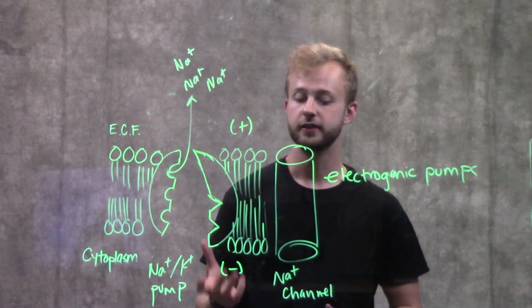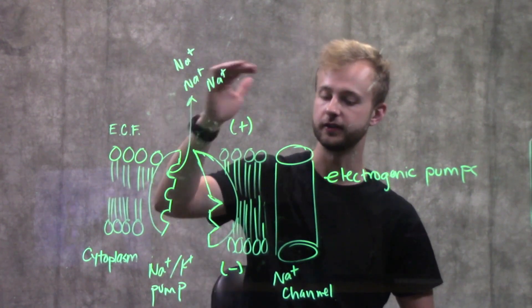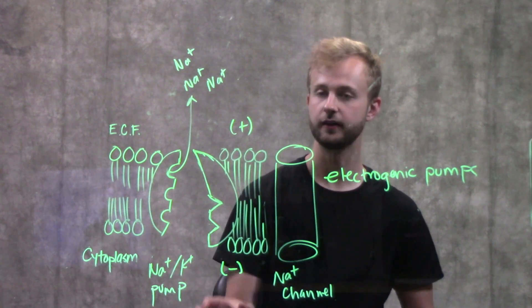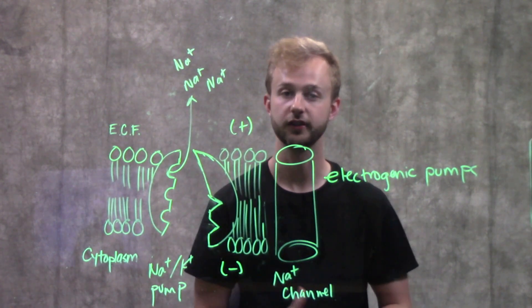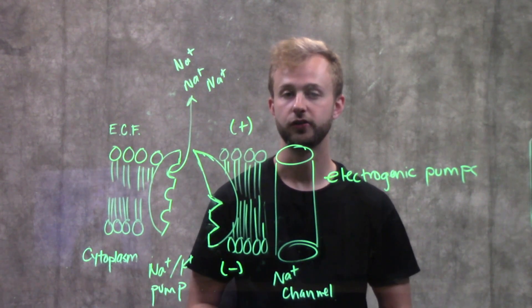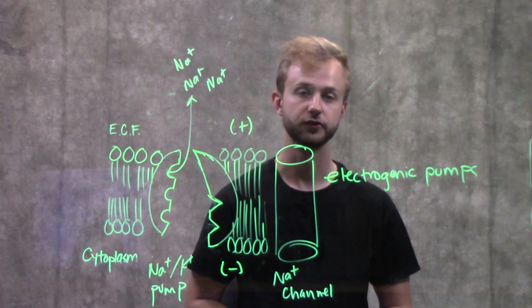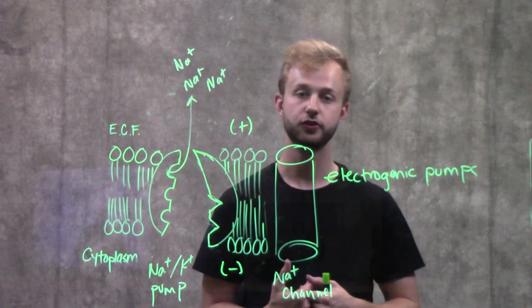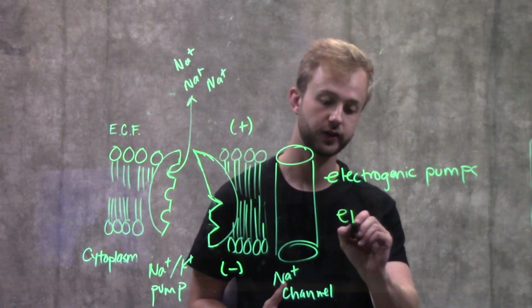But in addition, now sodium is going to be attracted to this negatively charged environment on the inside of our cells. So not only is it moving down its chemical gradient, it's moving down its electrical gradient as well. And so when we combine these two gradients we call it our electrochemical gradient.